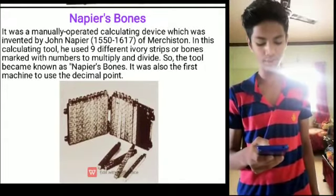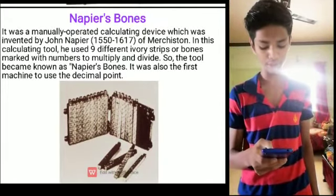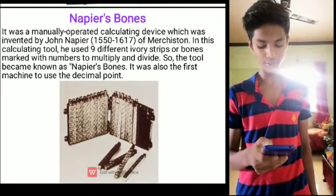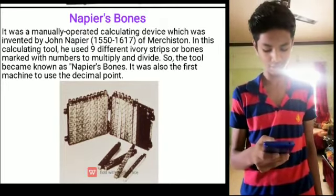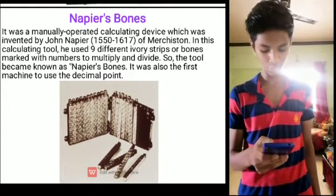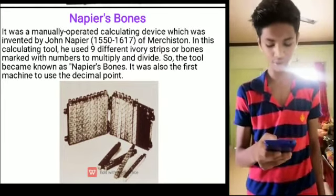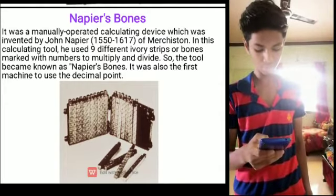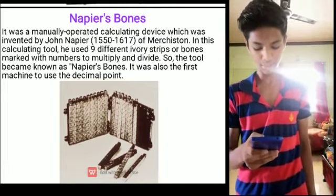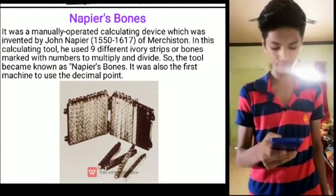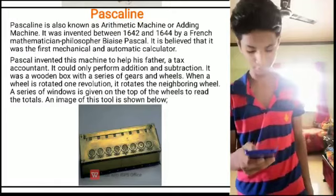2. Napier Bones: It was a manually operated calculating device invented by John Napier (1552–1617) of Murchiston's. In this calculating tool, he used 9 different ivory strips or bones marked with numbers to multiply and divide. The tools became known as Napier Bones. It was also the first machine to use a decimal point.